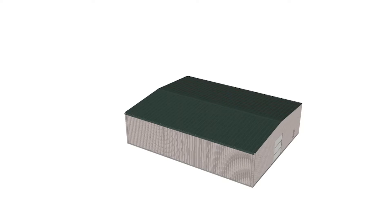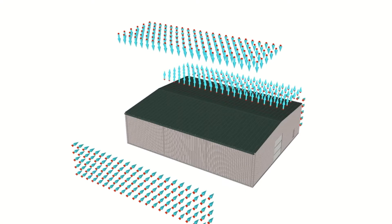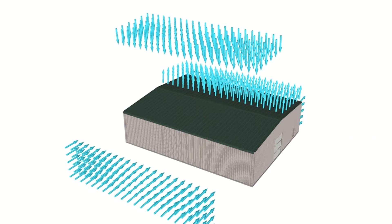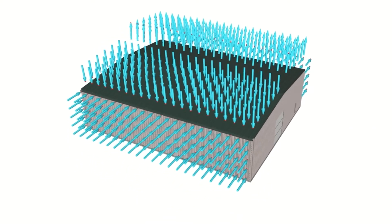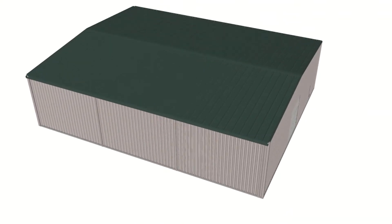Let's look at how wind loading in the transverse direction would be resisted by a metal building. Wind in the transverse direction will cause pressure on the windward sidewall and suction on the other three walls.